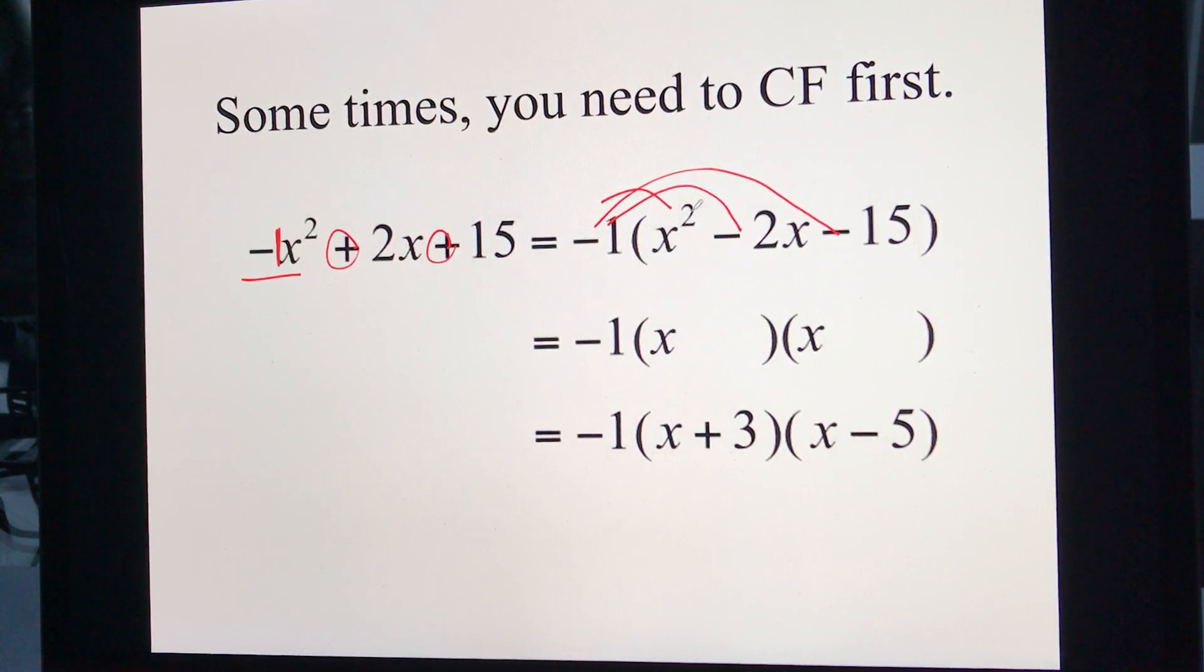Now, once the negative is out and this first term here, this x squared, is positive, then I can go back into my, okay, put my brackets down. It's a simple trinomial. Try to find two numbers that add to negative 2 and multiply to negative 15. There's my number, and there's my number there.